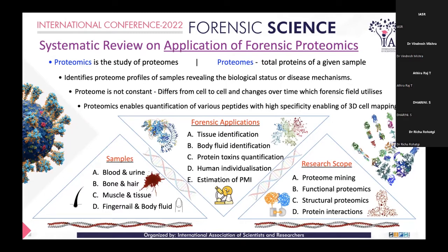This is the basic update on the systematic review of how we can apply proteomics in forensic science. There are many research scopes for the same, including functional proteomics, structural proteomics, and protein interaction. I personally think that structural proteomics can be given more emphasis, as it will be easier for us to study the structure of proteins using bioinformatics and proteomics combined. It can also be used for the estimation of BMI, which will be of more use for the forensic science community. Thank you all for your patient listening, and I'll be happy to answer any questions.